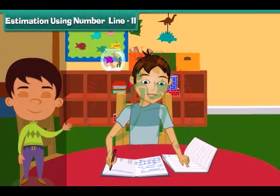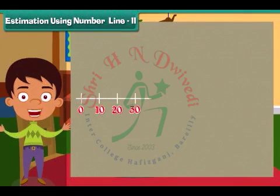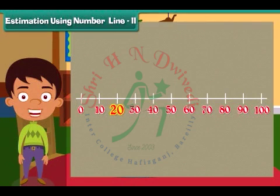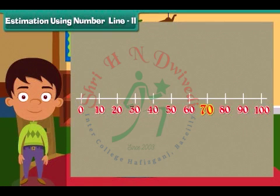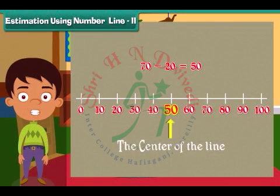Let us now consider a bigger number line from 0 to 100. Can you guess the position of number 20 on this line? It will be near 0. What about number 70? Yes, number 70 will be near 100. Subtracting 20 from 70 we get 50, and the position of 50 will be the centre of the line.